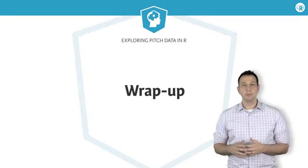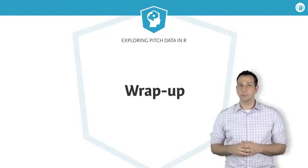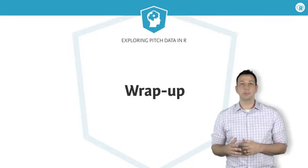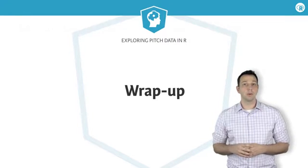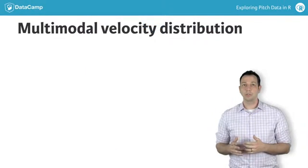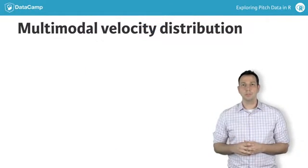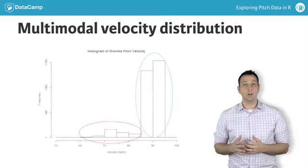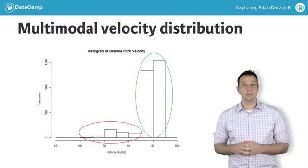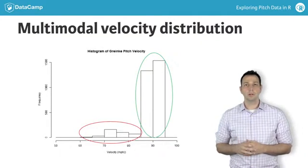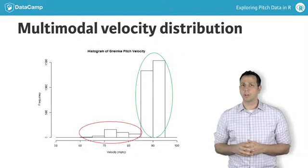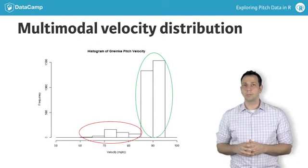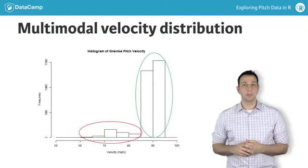Throughout this chapter, you managed to tidy up your pitch data and explore Zach Granke's pitch velocity in a number of ways. First, you took a look at the distribution of velocities for all of Granke's pitches, noting that there are clear multi-modal distributions. These were likely a result of various pitch types thrown at different velocities.